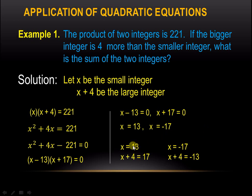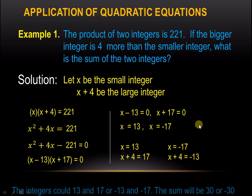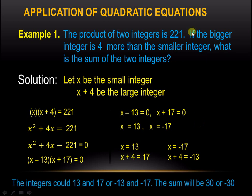The question is: which of these two answers do we choose? The answer is both of them. Because the problem did not state whether we are considering only positive or only negative integers, we have to consider both. To answer the question — what is the sum of the two integers — the answer is 30 or negative 30.